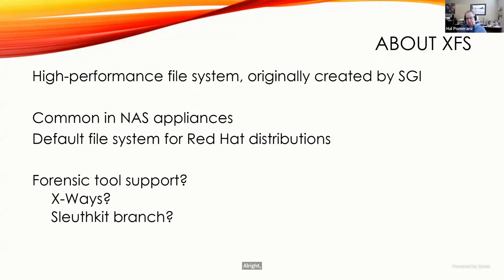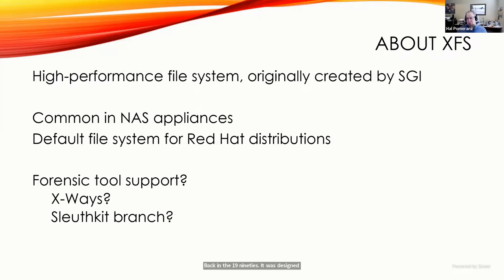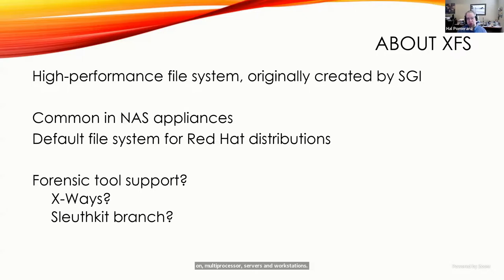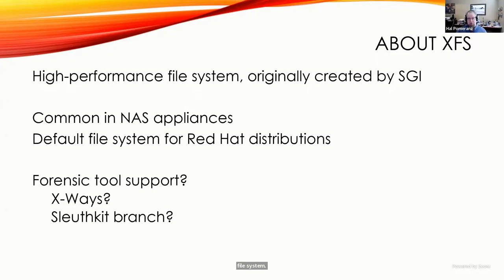Today I'm going to talk about XFS, a filesystem developed by Silicon Graphics back in the 1990s. It was designed to exploit their multi-processor architectures — SGI was the first Unix vendor to really go big on multi-processor servers and workstations. They wanted a filesystem that was multi-threaded, with multiple write threads going simultaneously to improve performance. These days SGI doesn't really exist, but the filesystem lived on because it's actually quite good. XFS is part of every Linux OS, and for a while Red Hat used it as their default filesystem.